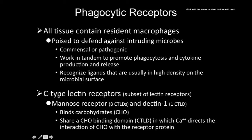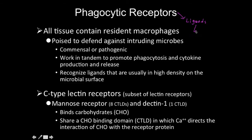Now let's talk about C-type lectin receptors. A lectin receptor is simply a protein designed to bind sugars. The two types of phagocytic receptors are lectins and scavenger receptors. The ligands for lectins tend to be either a sugar or part of a lipid. The mannose receptor is an example of a lectin — it has eight CTLDs, which stands for C-type lectin binding domains.